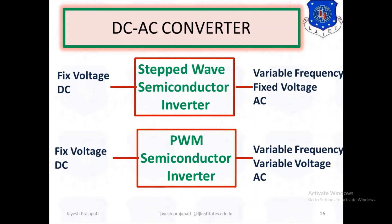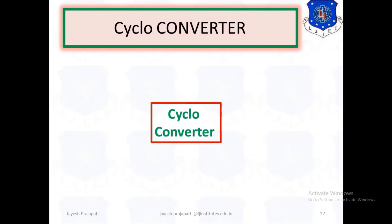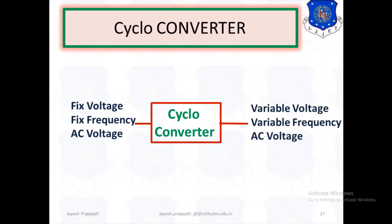The cycloconverter: the word 'cyclo' refers to frequency, and 'converter' means to convert. A cycloconverter converts frequency from the input side to the output side. From a fixed voltage, fixed frequency AC input, it provides variable voltage and variable frequency AC at the output.